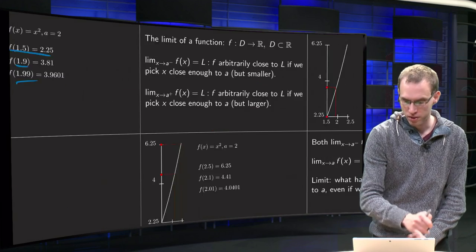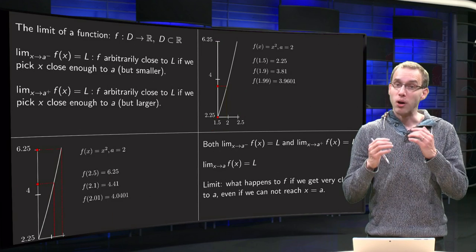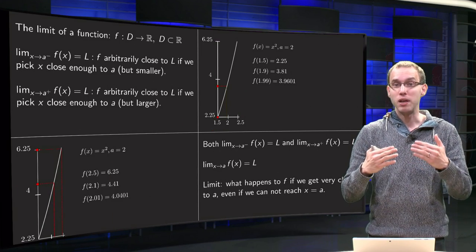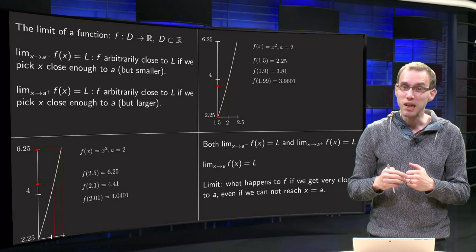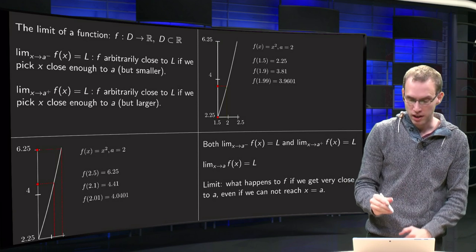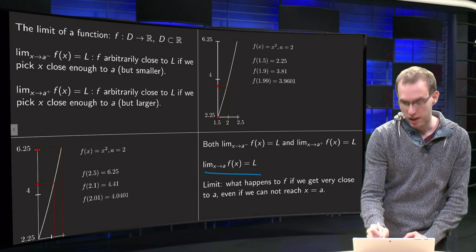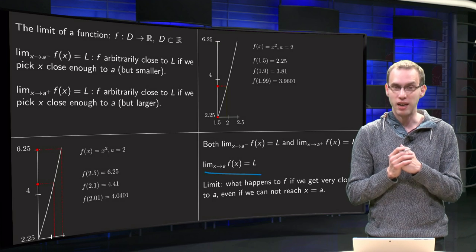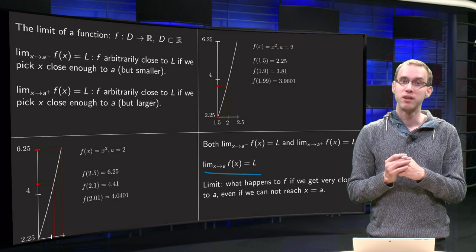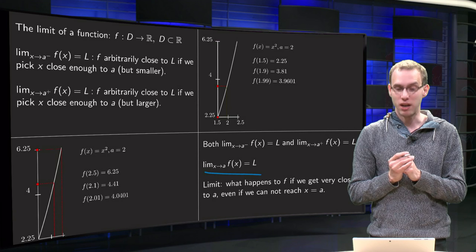You can see it from the graph. So if we say that both limits going from below and from above approach the same value L, then the shorthand notation is limit x approaching a f equals L. Then we say the limit of f for x going to a equals L.